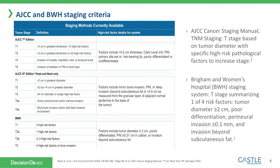The Brigham and Women's system derives a tumor stage based on the cumulative number of high risk factors, from 0 to 4. Those with T1 disease have no high risk factors, T2A has one, T2B has two or three, and T3 has four high risk factors or bone invasion. The defined high risk factors include: greater than or equal to two centimeters in diameter, poor differentiation, perineural invasion involving a nerve of caliber ≥0.1 mm, and invasion beyond the subcutaneous fat.